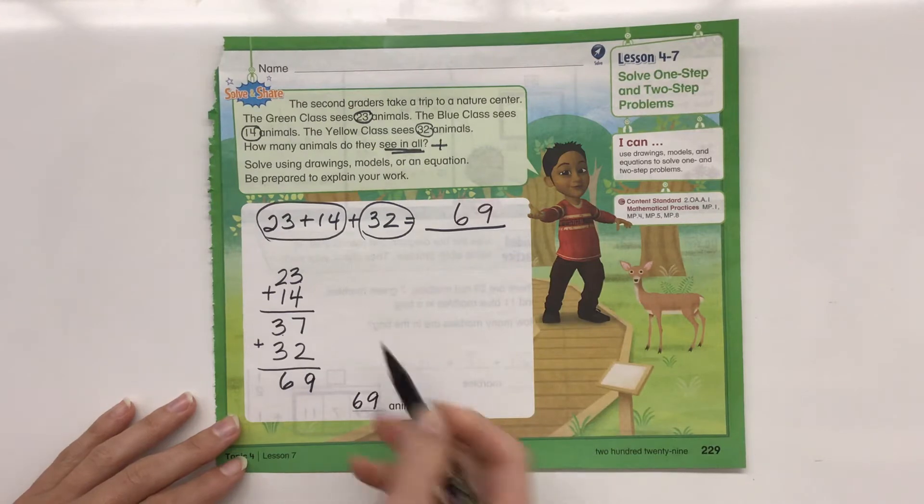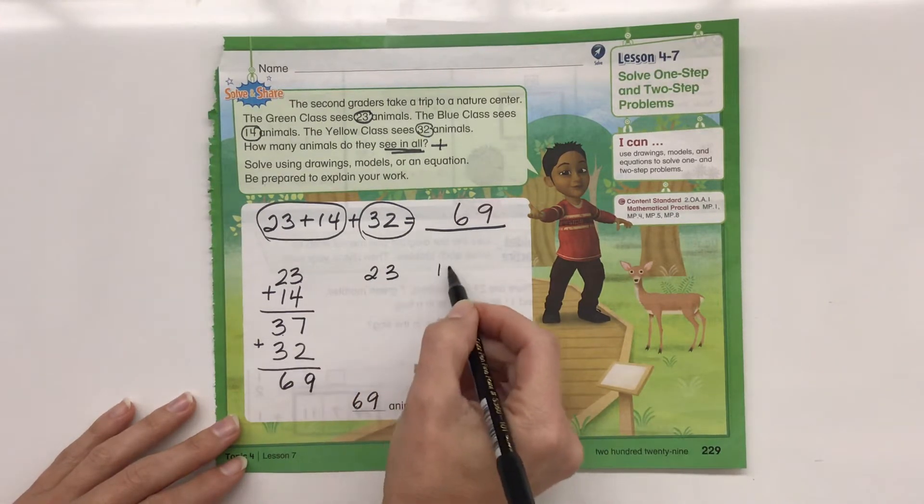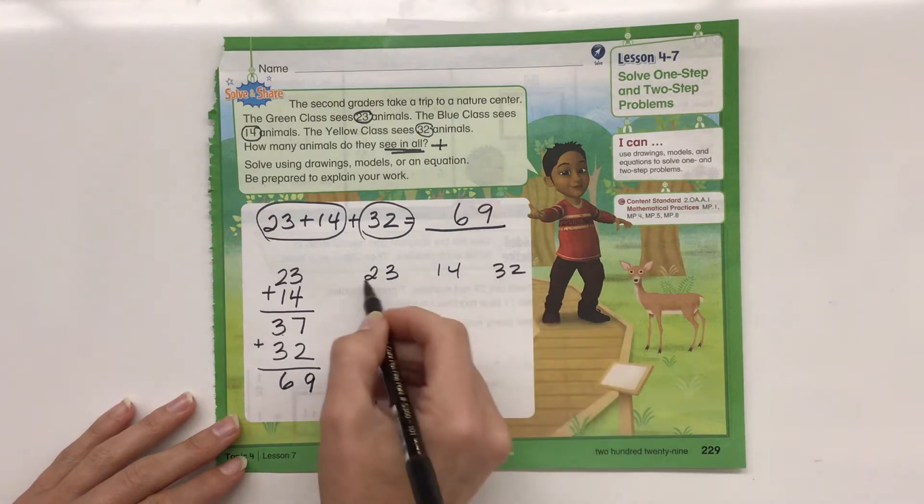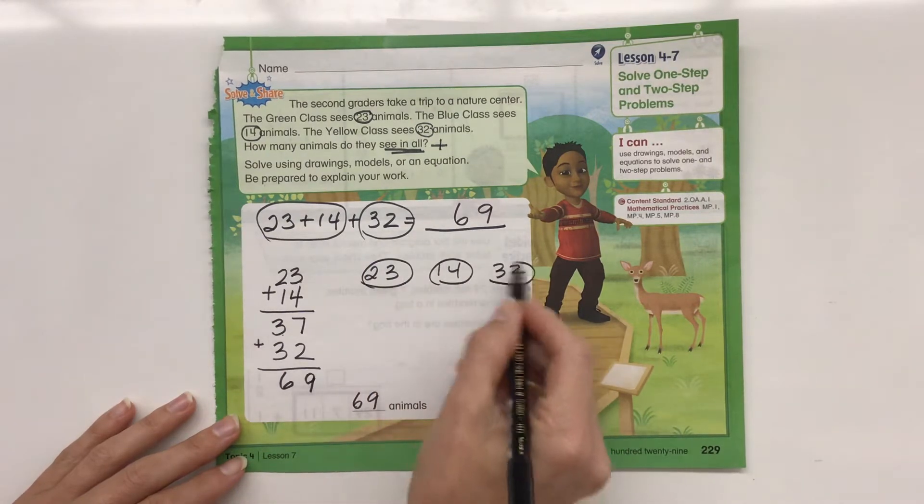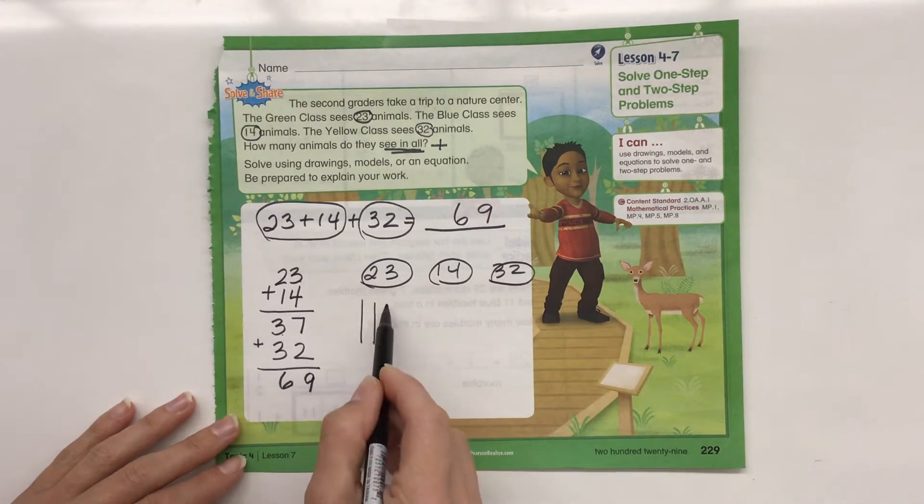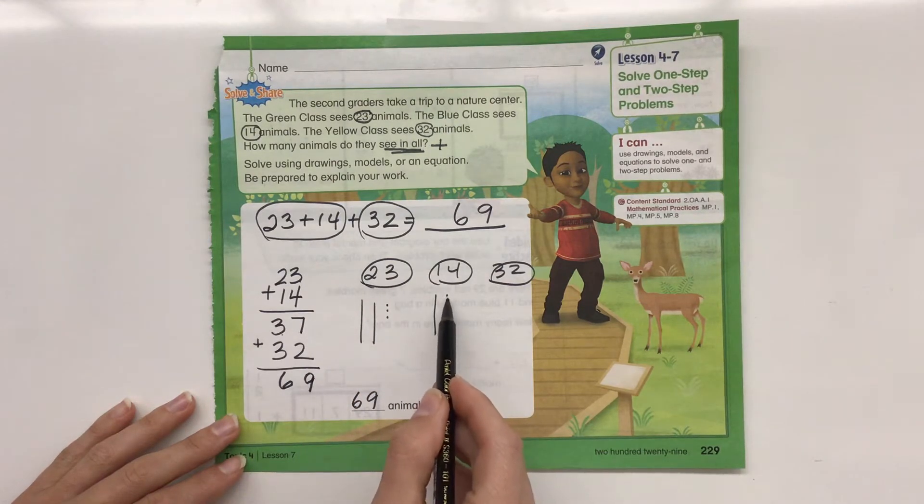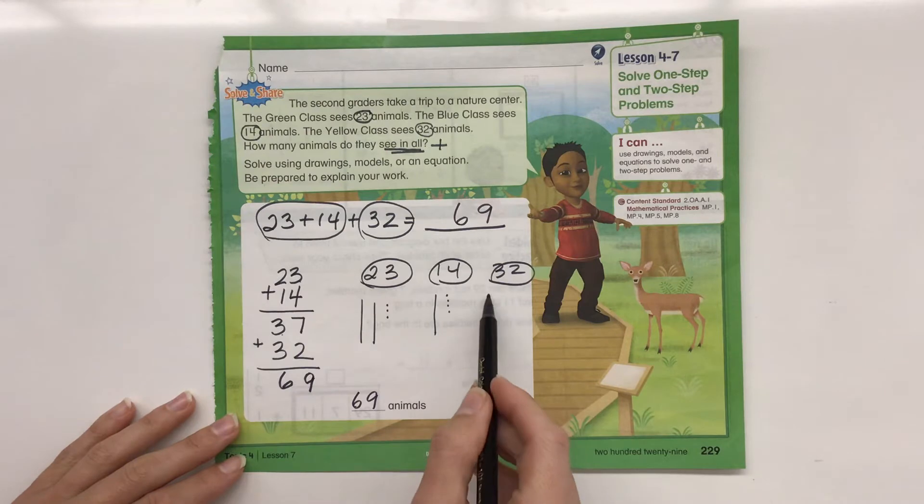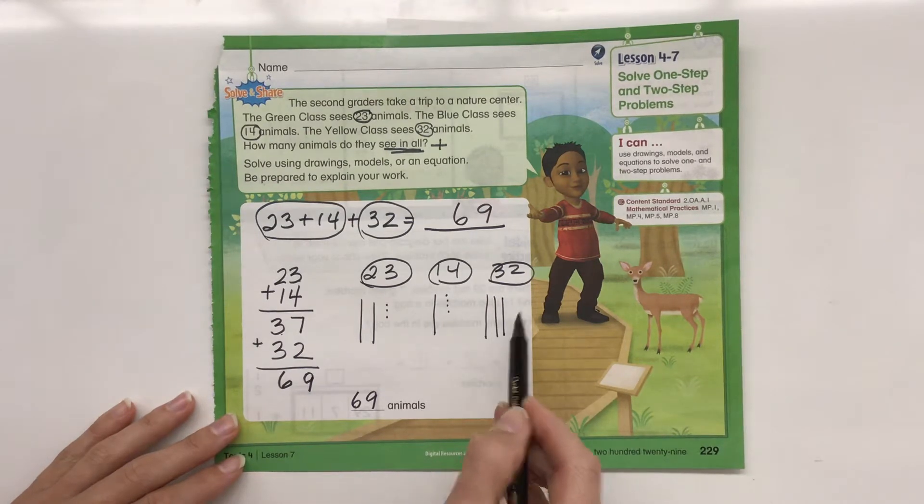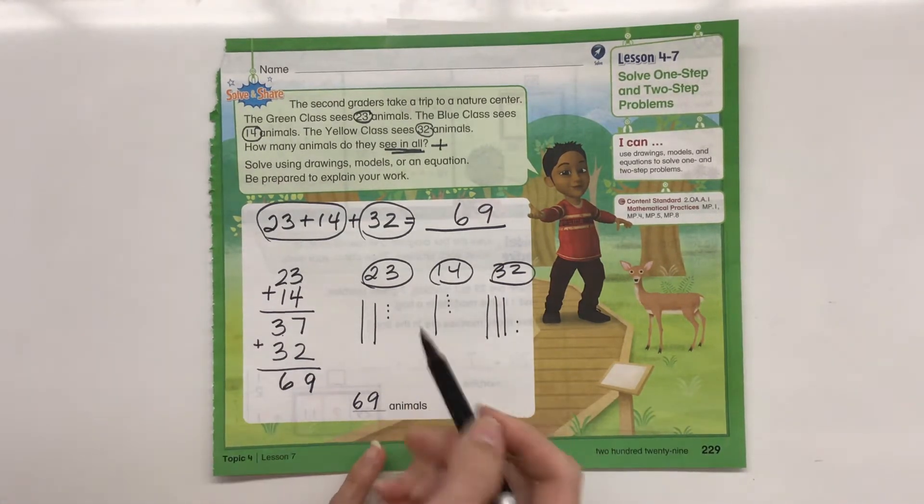You could draw pictures if you wanted to. You could do 23, 14, and 32. If you decided to draw pictures, you do 10, 20, 21, 22, 23. 14 is 10, 11, 12, 13, 14. 32 is 10, 20, 30, 31, 32. And then you could add them this way.